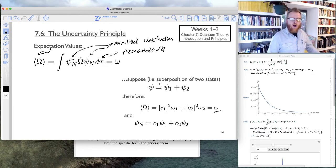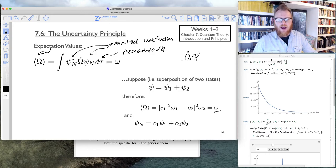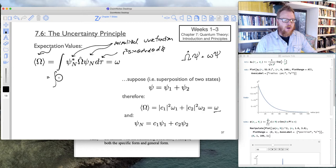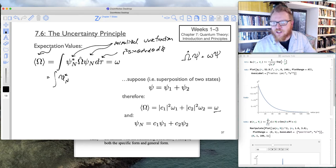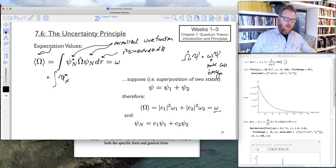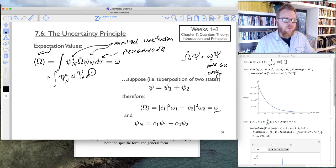We remember that d tau is r squared sine theta dr d theta d phi. And we remember, just in general, because these are eigenvalue equations, when I take the operator and operate on psi, I get back the eigenvalue multiplied by psi. So if I continue along here, we know that this is going to equal psi star_n, and I'll replace this omega psi.